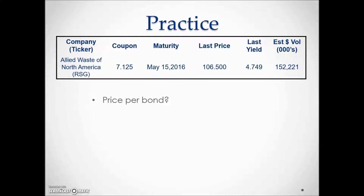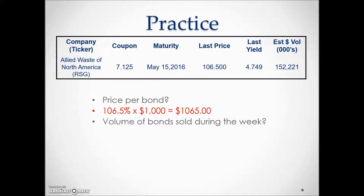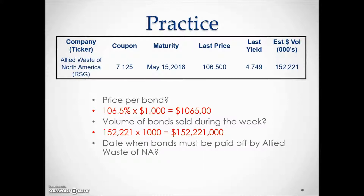Let's calculate the purchase of a bond. This example shows Allied Waste of North America, where the last price was 106.5% of $1,000. We take that percentage times $1,000 — this is what we would pay to purchase this bond. The number of bonds sold during the week is found by taking the last column figure and multiplying by 1,000. This bond matures on May 15, 2016, which is when Allied Waste of North America must pay off this bond.